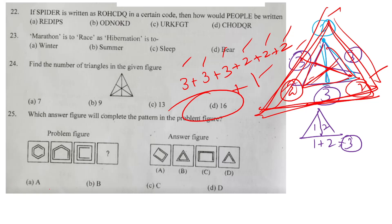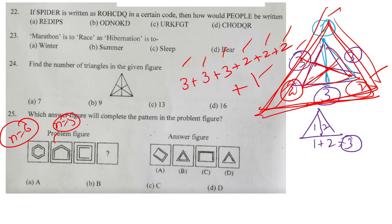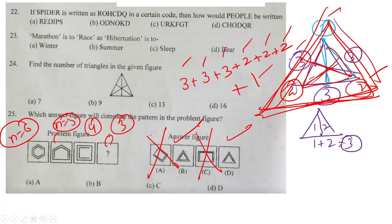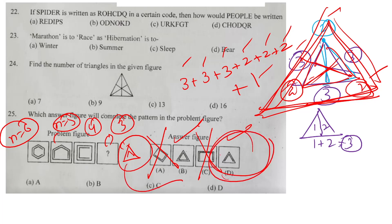So our answer will be option number D. Which answer figure will complete the pattern? The relation: hexagon has 6 sides, pentagon has 5 sides, square has 4 sides — obviously the next shape has 3 sides. There may be confusion between B and D, but checking the correct portion, option number D will be the correct answer.